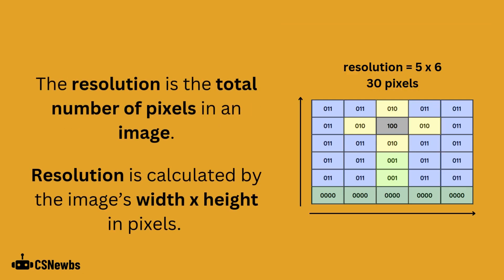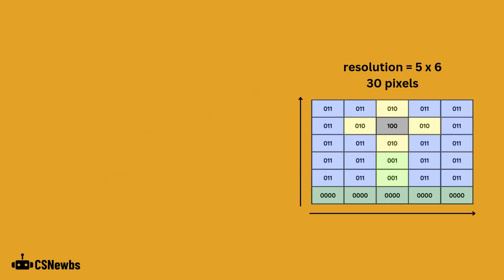The resolution is the total number of pixels in an image. Resolution is calculated by the width times the height in pixels. In this example, the width is 5 pixels and the height is 6 pixels, giving 30 pixels in total.